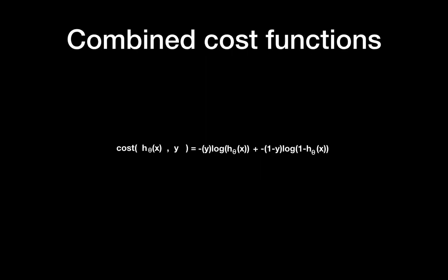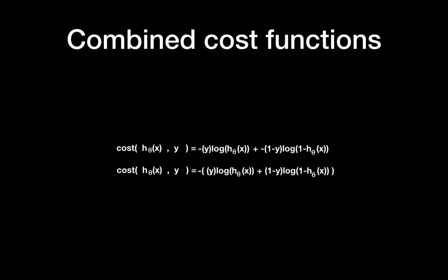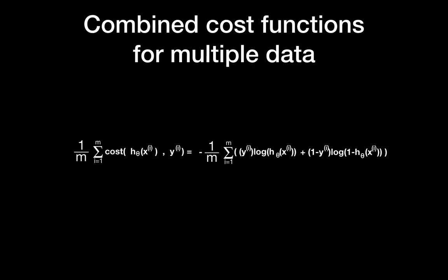We can combine these two cost functions into one. When y = 1, the right side term (y−1) becomes 0, eliminating it. When y = 0, the left side term y becomes 0, eliminating it. The combined cost function is organized by taking a minus sign on the left. For multiple data points, sum every individual cost and divide by the total number of data points. I hope this helps you understand logistic regression — see you in the next video, thank you!